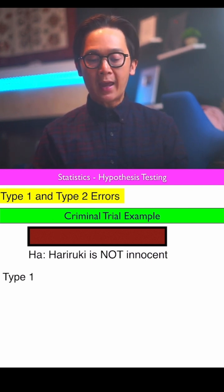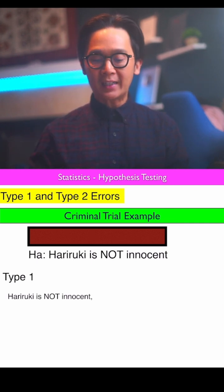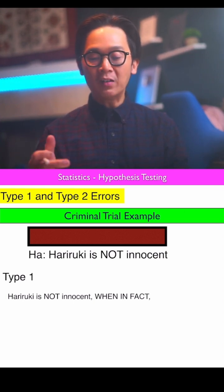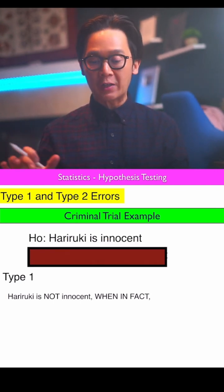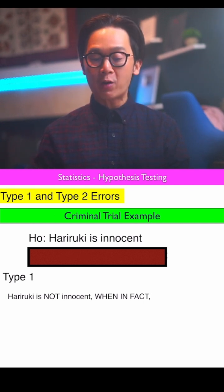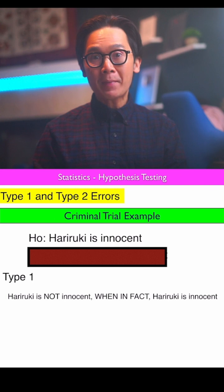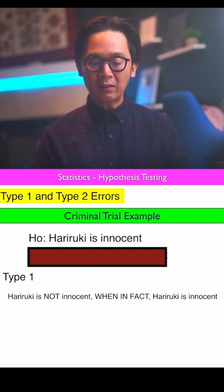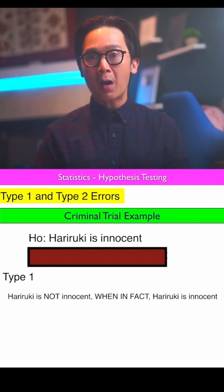In this case, the alternative hypothesis is showing. In a type 1 error, you write the alternative hypothesis first: 'Harry Ruki is not innocent.' Then the third step is to write out the null hypothesis, which is 'Harry Ruki is innocent.' So the type 1 error is: Harry Ruki is not innocent when in fact Harry Ruki is innocent.